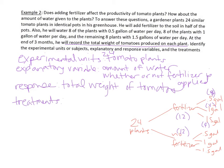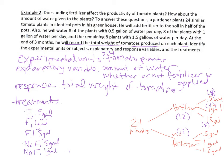The six treatments are: fertilizer with 0.5 gallons, fertilizer with 1 gallon, fertilizer with 1.5 gallons, no fertilizer with 0.5 gallons, no fertilizer with 1 gallon, and no fertilizer with 1.5 gallons. These are called treatment groups.